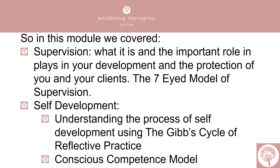In this module, we covered the following areas. We looked at supervision — what it is and the important role it plays in our development and the protection it gives us for ourselves and our clients. We looked at the seven-eyed model of supervision and why it's so important to understand all the different characters at play during counselling therapy. We then moved on to self-development — understanding the process using the Gibbs cycle of reflective practice and why reflective practice will make us better helpers and counsellors. Finally, we looked at the conscious competence model — about how we learn and the process we go through to eventually apply the skills we have learned easily and effortlessly to the benefit of our clients.